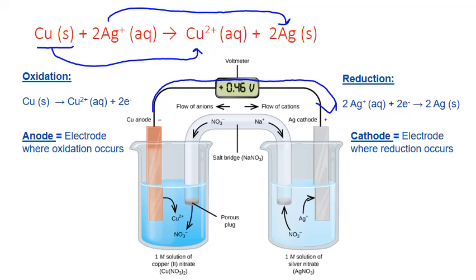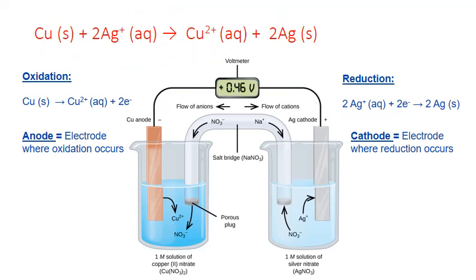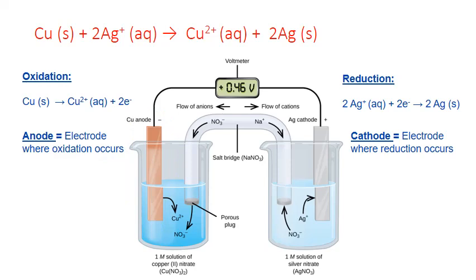Each half cell also contains an electrode — a piece of solid metal where the transfer of electrons can occur. The electrode where oxidation occurs is known as the anode. In this case the anode is a piece of solid copper metal that is also a reactant in the process. As the reaction goes forward, the copper metal is slowly dissolved into copper(2+) ions, which are released into the solution. As the positive copper(2+) ions are produced, negatively charged nitrate ions from the salt bridge are attracted to balance the positive charge.